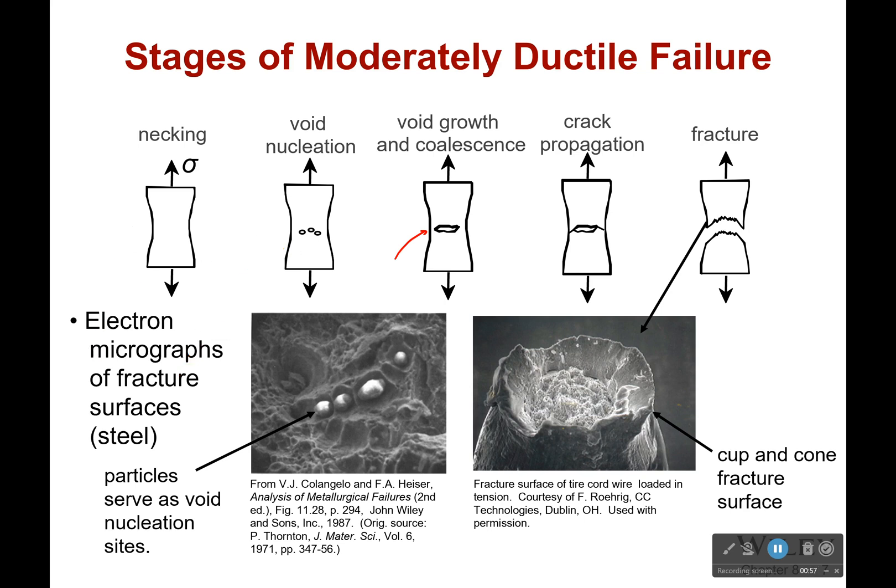The cool thing is we can actually see where these voids happen. In this case, the voids happen around these little particles. You might wonder — well, what were those particles? They weren't metal, for one. And so the bonds weren't so strong around them.